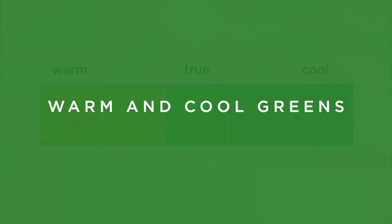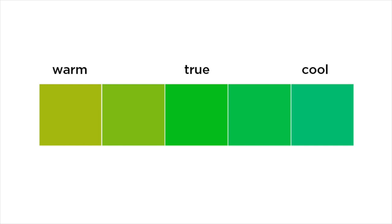A cool green is going to be one that has more blue in it and a warm has more yellow, and there's a lot of different things you can change in this and they'll still be warm and cool.